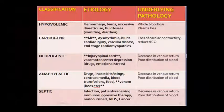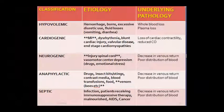Hypovolemic shock tab hota hai - hemorrhage ki case mein, burn ke case mein, bahut zyada diuretics ka use karne se, fluid ka loss hone se jaise vomiting diarrhea mein hota hai. Second class hai cardiogenic shock - isme cardiac contractility kum ho jaati hai aur cardiac output kum ho jaayega. Aisa MI se ho sakta hai, dysrhythmia se ho sakta hai, blunt cardiac injury hone ki wajah se, valvular disease aur end stage cardiomyopathy se aisa ho sakta hai. Third hai neurogenic shock.